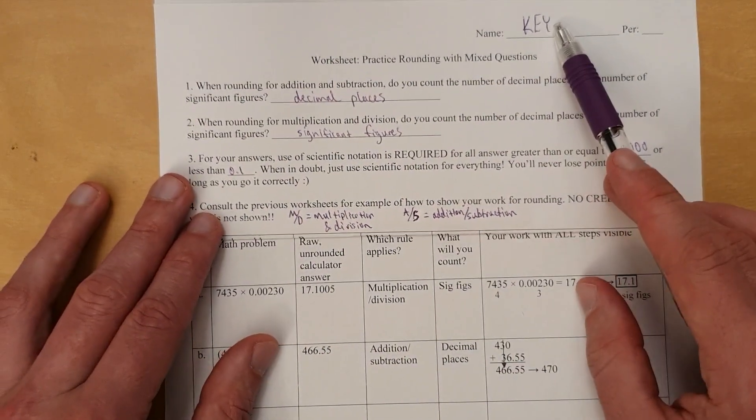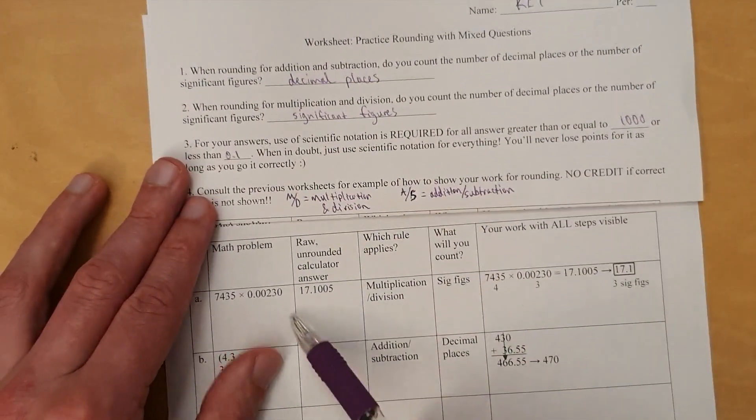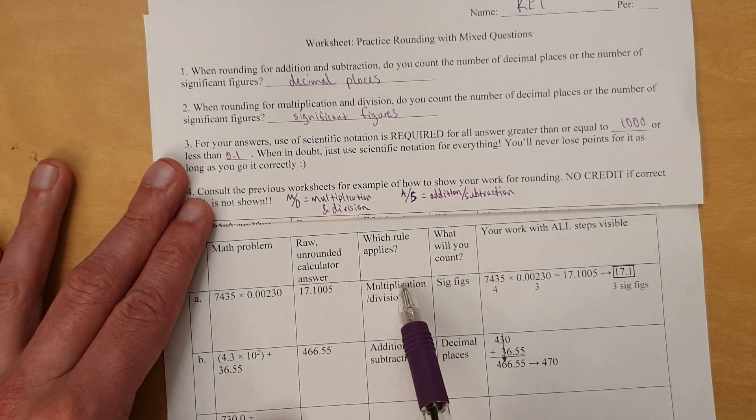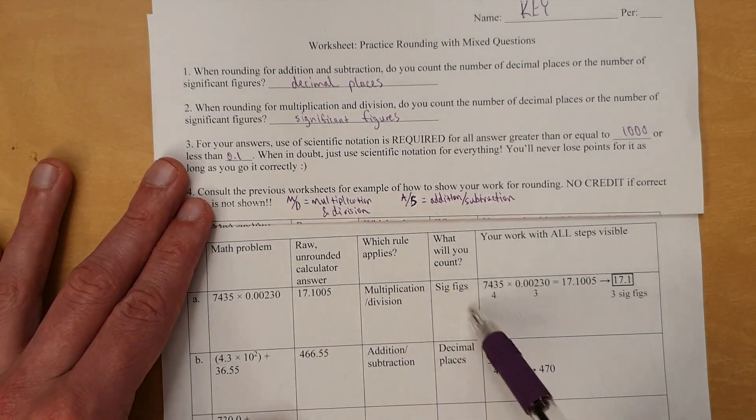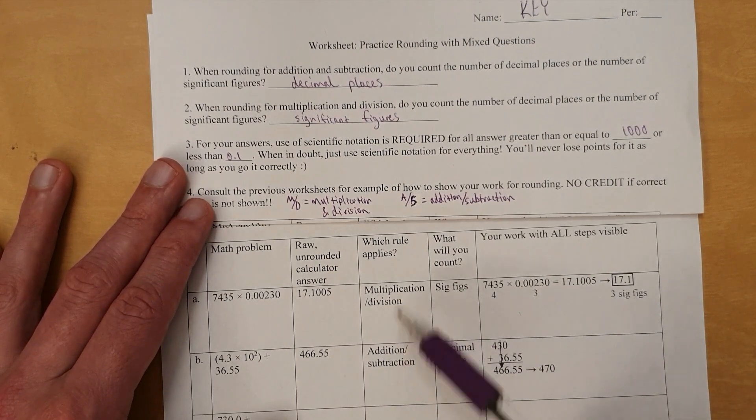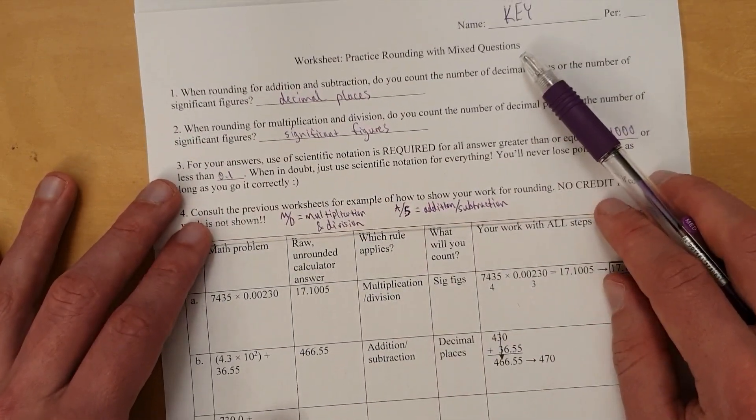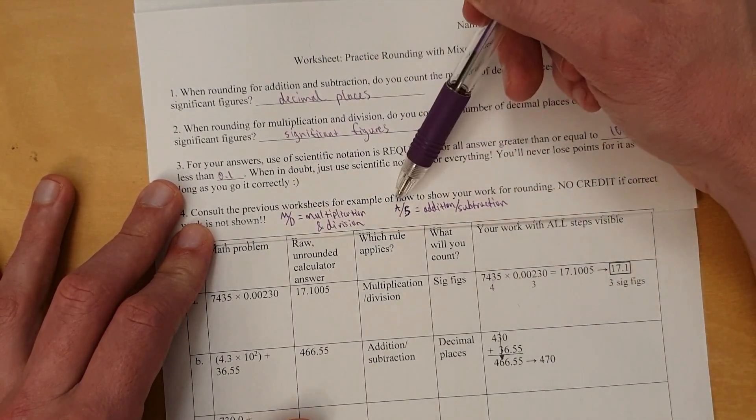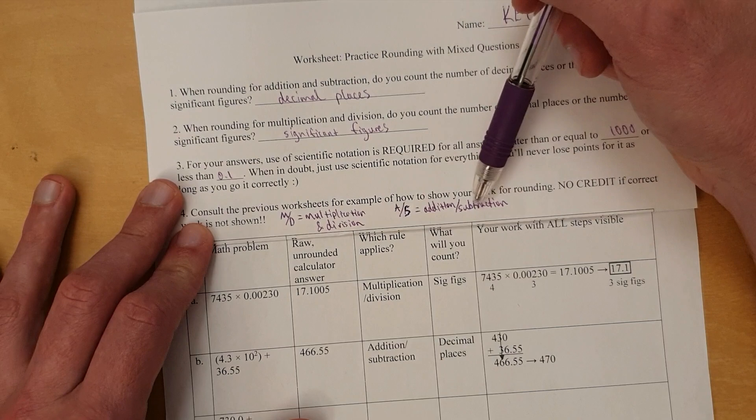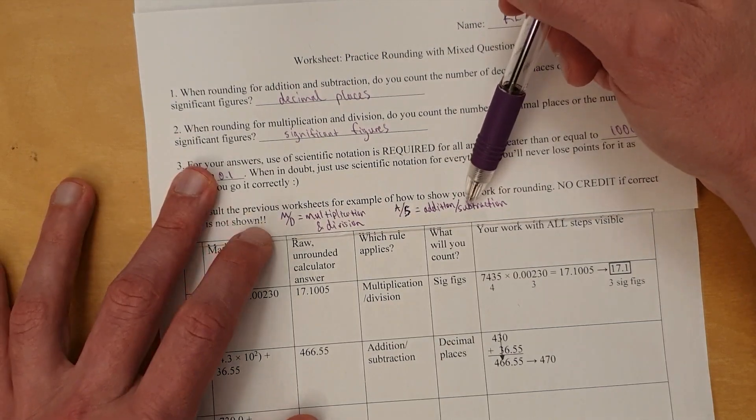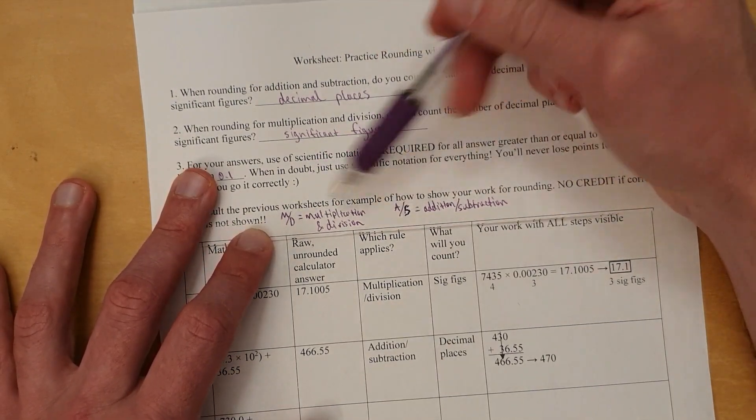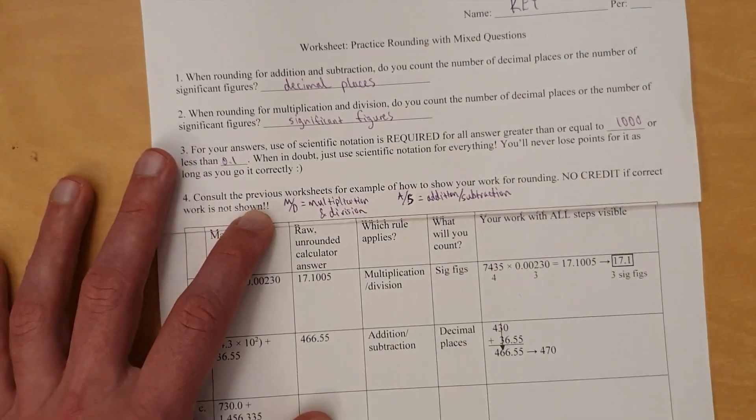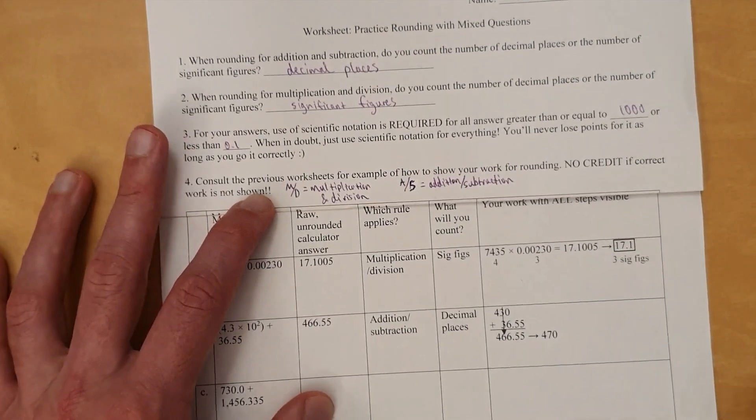Now, what we're going to do is we're going to for each of these, run through the calculation, write the raw answer, write which rule applies, write what we're counting, and then show the work. In order to make this go faster, I'm going to make this answer key right here. M over D equals multiplication division, A over S equals addition subtraction. It's generally bad to make up your own abbreviations, but if necessary, always put a key so that it's clear what your abbreviations stand for.